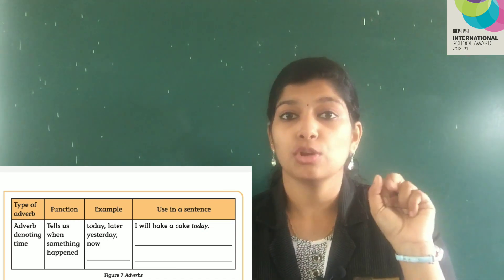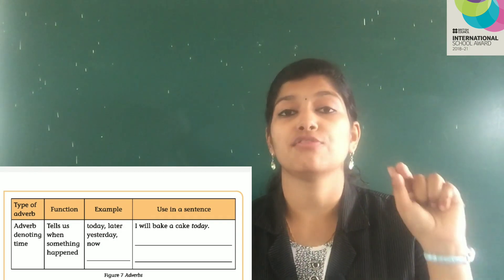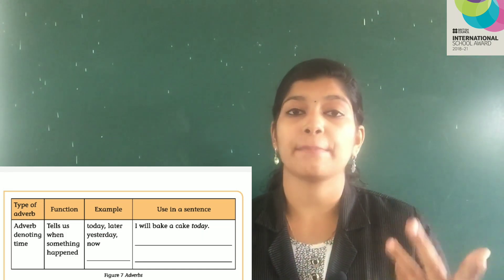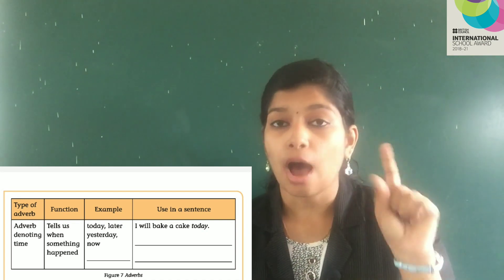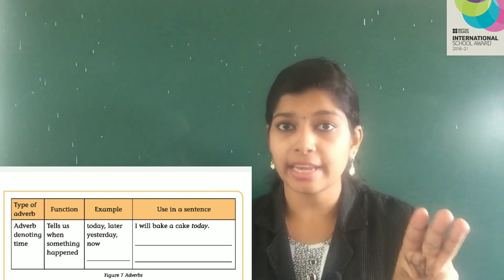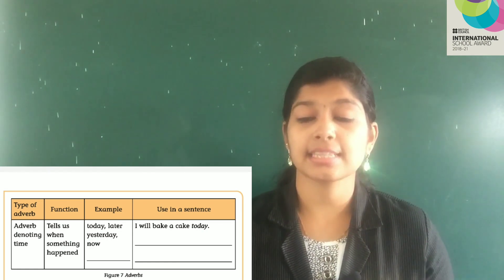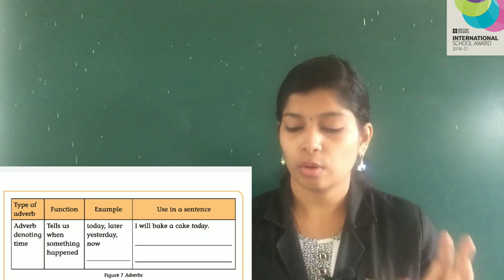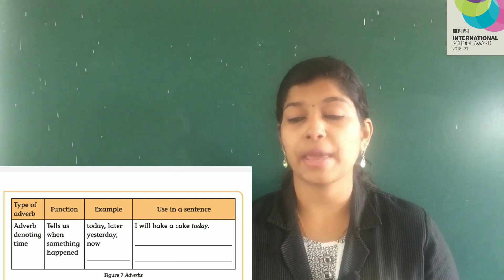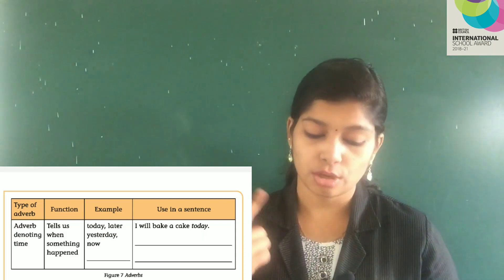Adverb denoting time. We have learned two types: adverb denoting manner — how something happened; adverb denoting place — where it happened; and adverb denoting time — when it happened. Whenever something happens, we ask three things: how, where, and when. Adverb denoting time tells us when something happened. Examples: today, later, yesterday, now. First sentence: I will bake a cake today. So, today is the adverb used here. Now you have to make your own sentence.